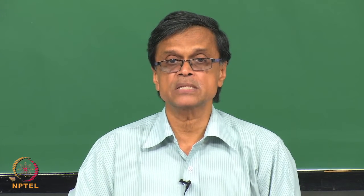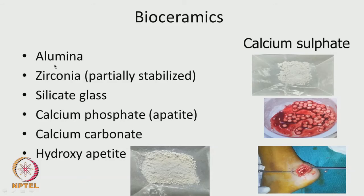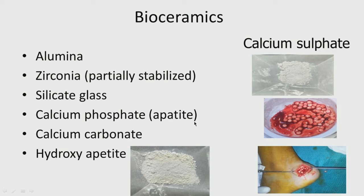If you look at bioceramics, alumina (aluminium oxide) is a ceramic material which finds a lot of application. Zirconia — zirconium oxide — and silicate glass, that means SiO2, are also used. Then calcium phosphate, which is the apatite. Our bone contains a lot of this calcium phosphate and hydroxyapatite. All these ceramics are finding a lot of application.